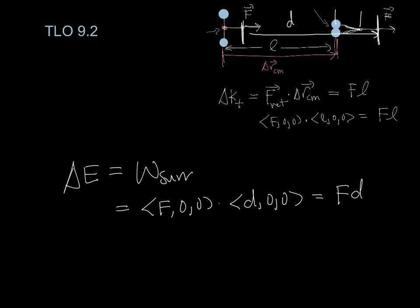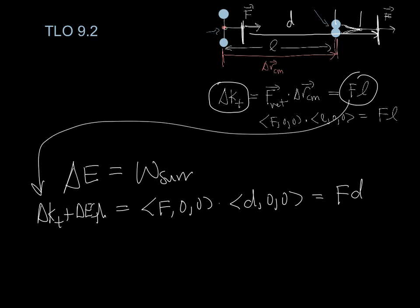Now, what is the change in the energy? There's only two kinds of energy in the system. There's the translational kinetic energy, and there's the thermal energy. There's no spring, there's no gravitational potential energy, nothing like that. So that's all we have. Now, we already worked out the change in the translational kinetic energy. That's F times L. So I can take that result, plug it in here for the change in the translational kinetic energy, and I get F times L plus the change in the thermal energy is equal to the work done.